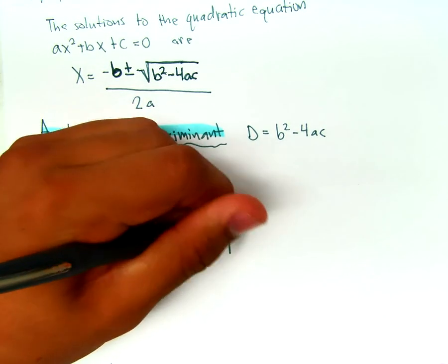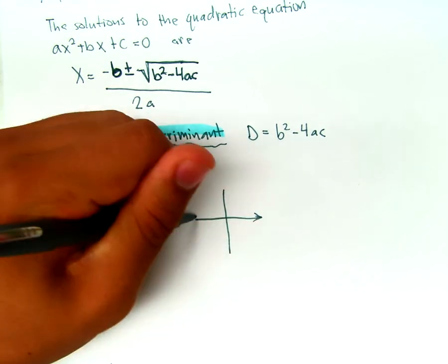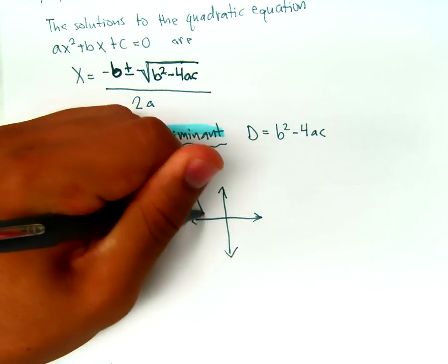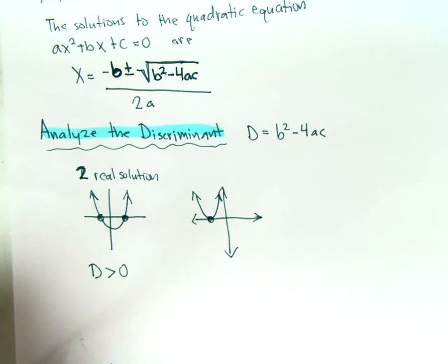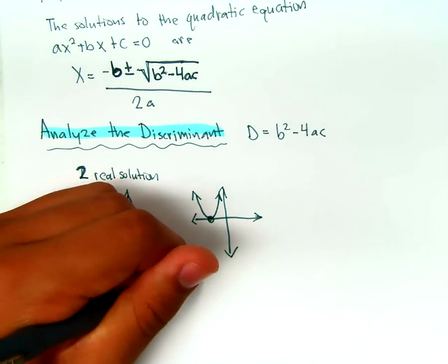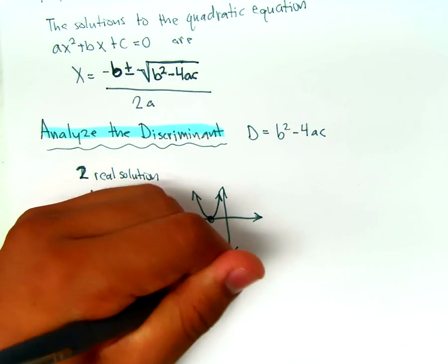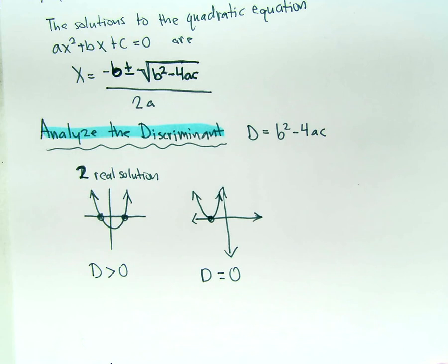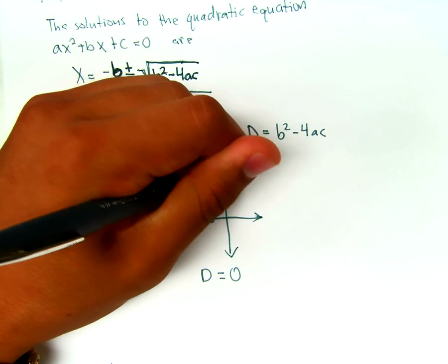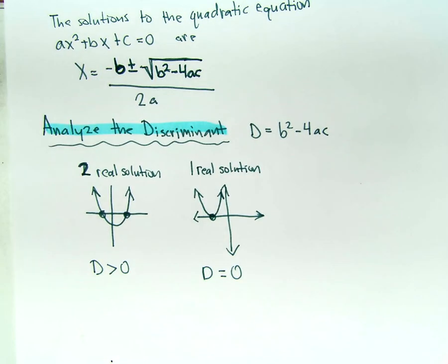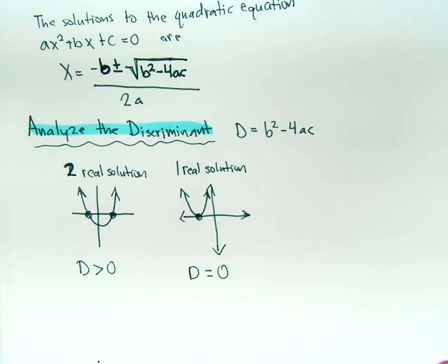We also have the case where we have one real solution — where the parabola just touches the x-axis once, having one x-intercept or one zero. This is the case where our discriminant equals zero — where the part under the radical equals zero. And that gives us one real solution.